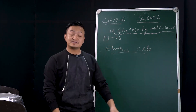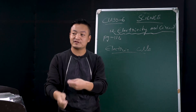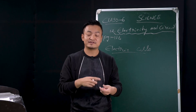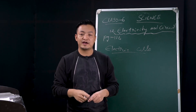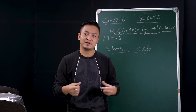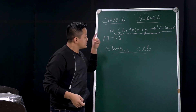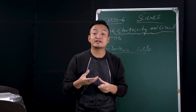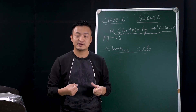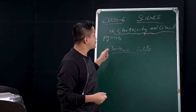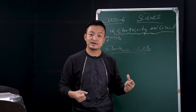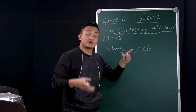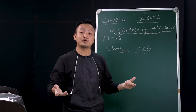Electric cells are present inside the cell phone, inside the battery, inside the watch, and many more devices. These electric cells are made up of chemicals, and they provide electricity through those chemicals.